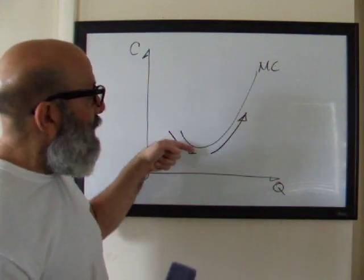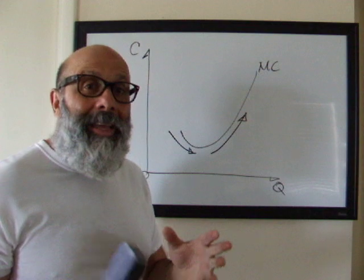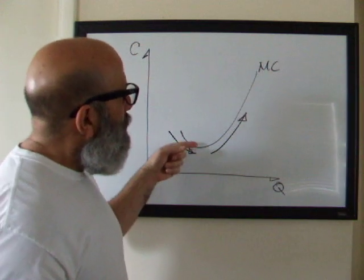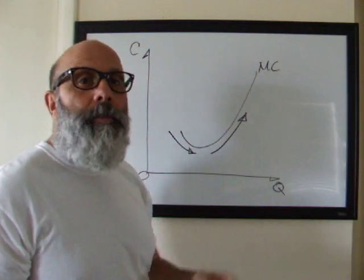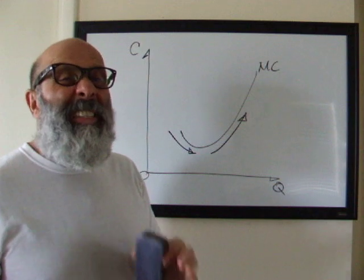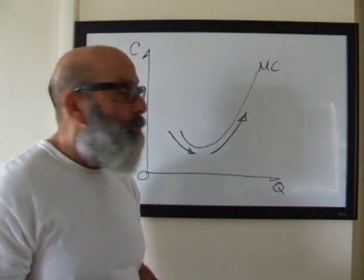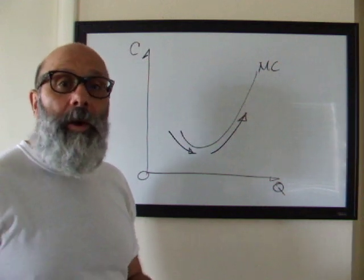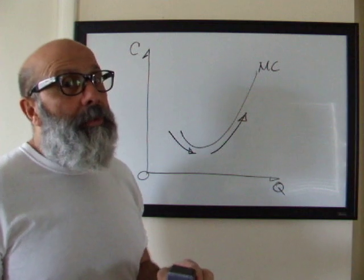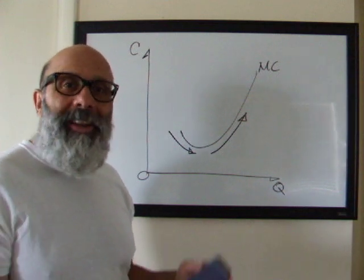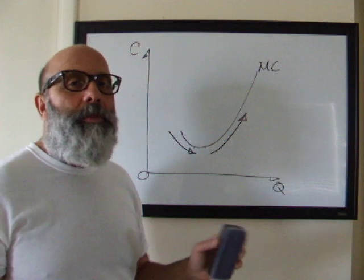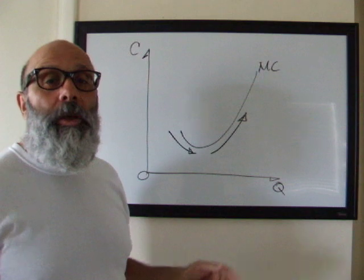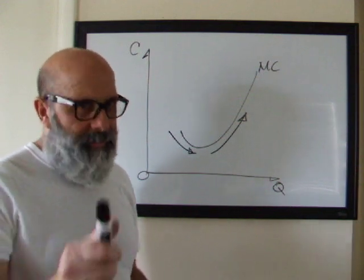So this marginal cost curve slopes down when a firm is in the region of increasing returns on the total product schedule and the marginal cost curve slopes up when the firm is in the diminishing or decreasing returns on the total product curve. This marginal cost curve is an important curve because it helps us understand the shape of the average total cost curve and even the average variable cost curve. In another video, we're going to go ahead and we will tie all of those cost curves together for you. This is just the relationship of marginal cost with total product and marginal product. Thanks for watching.